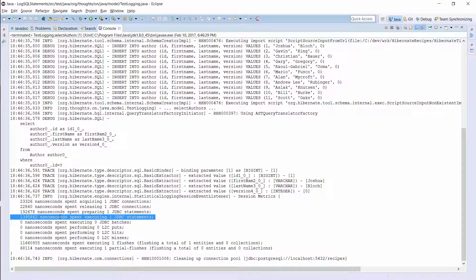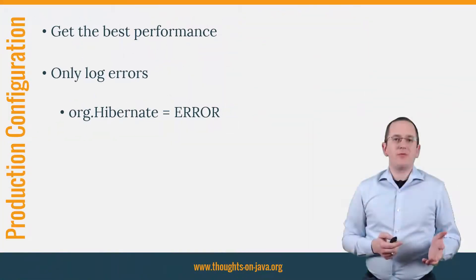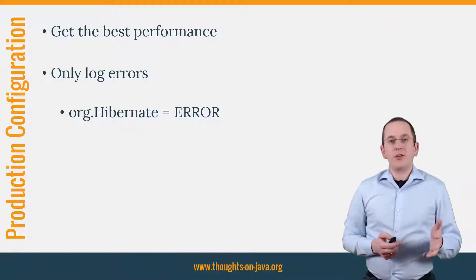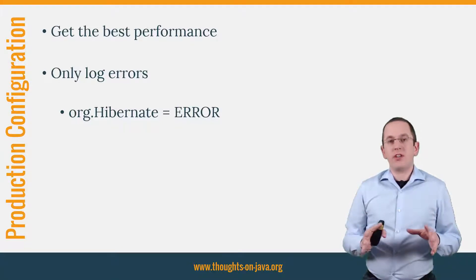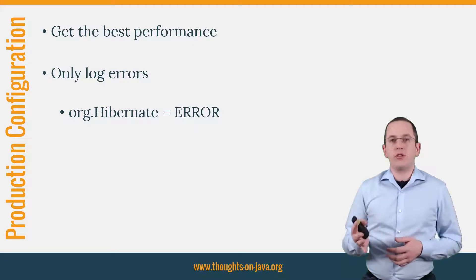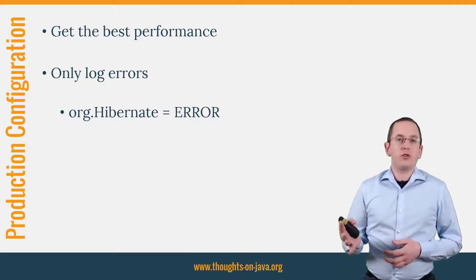My recommended production configuration is simple. As long as you don't need to analyze an issue in production, you should log as little information as possible. You do that by setting all Hibernate-related log categories to error. You should also make sure to deactivate the Hibernate statistics component.